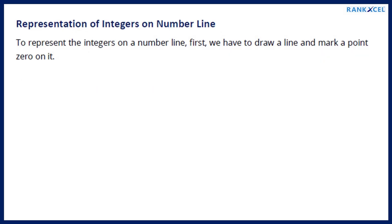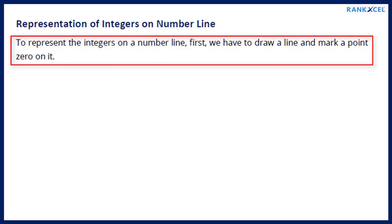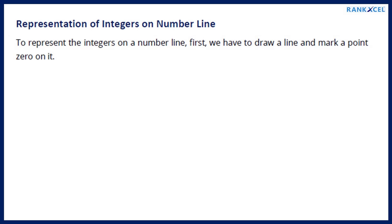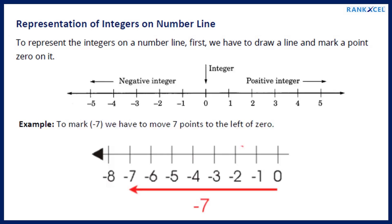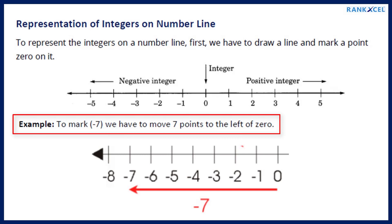Representation of integers on a number line: To represent integers on a number line, first we draw a line and mark a point 0 on it. Example: to mark minus 7, we have to move 7 points to the left of 0.